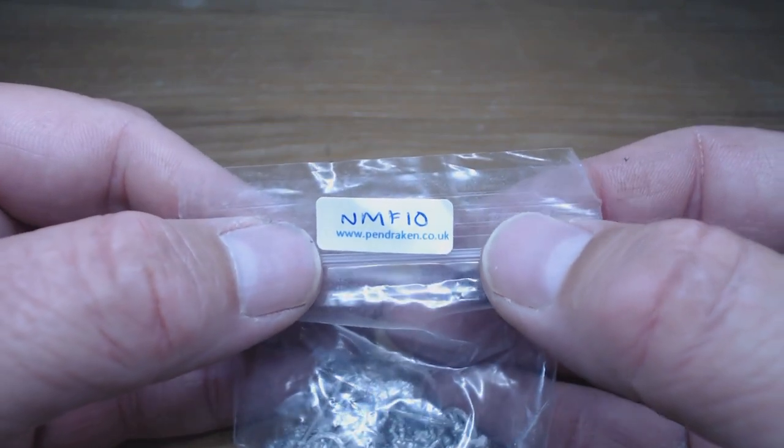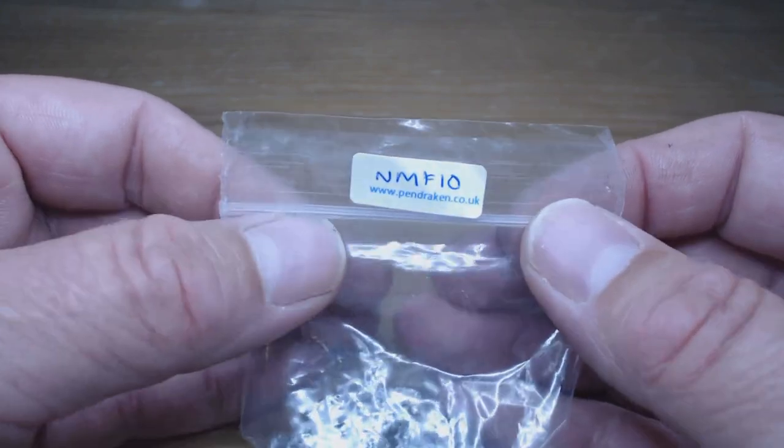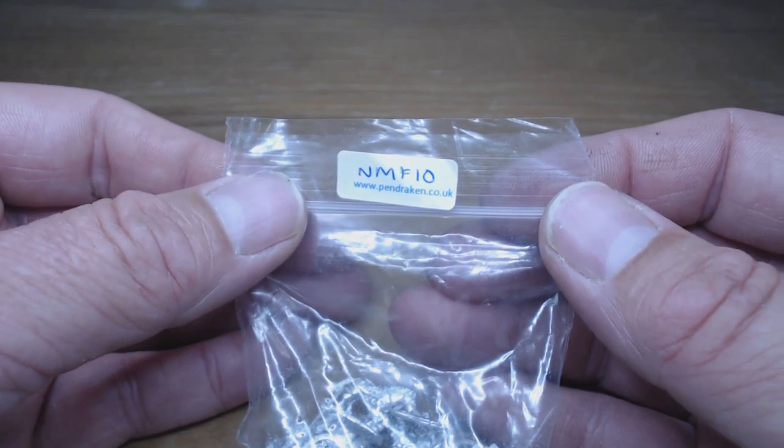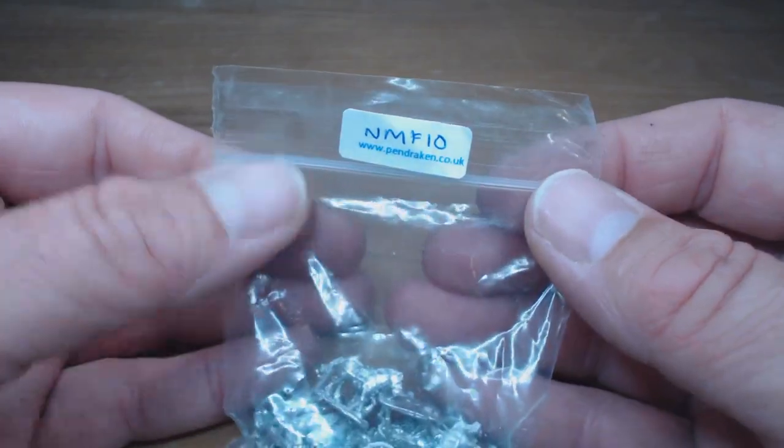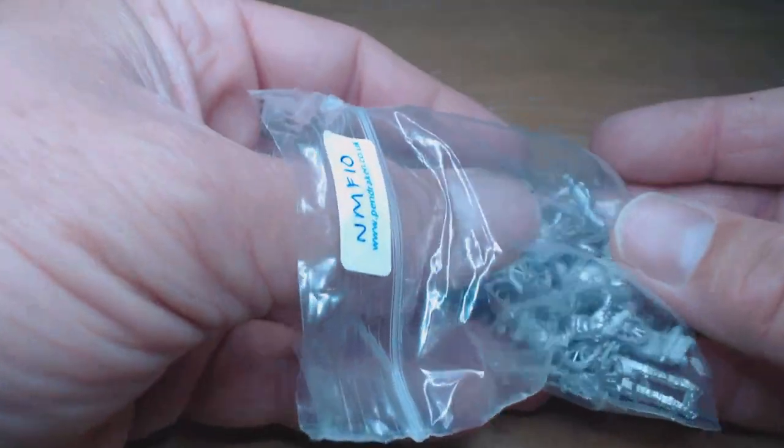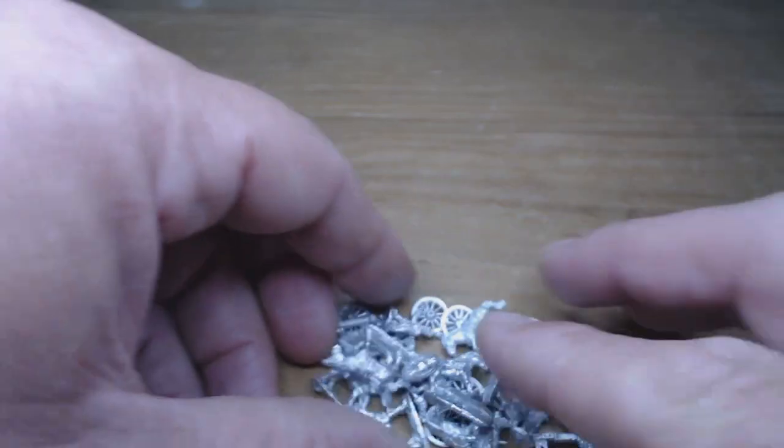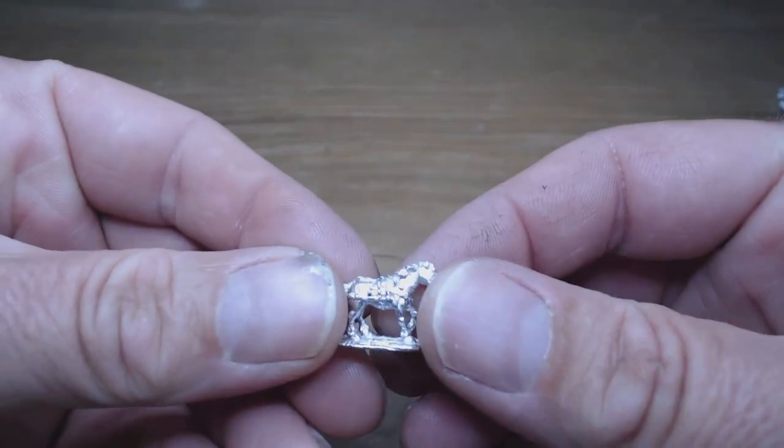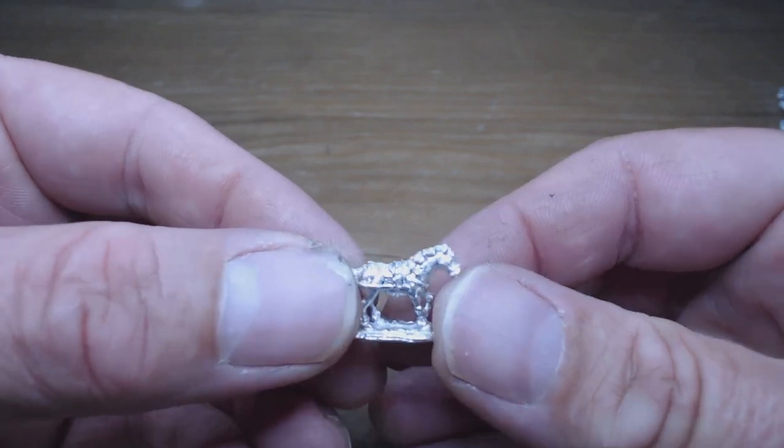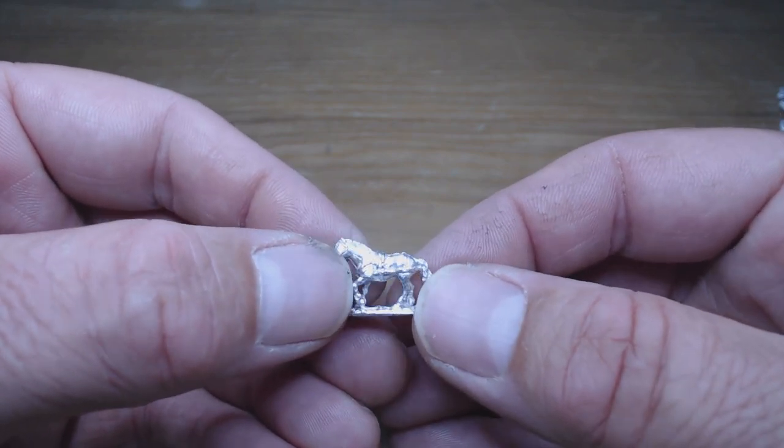Next up is NMF10 which is guns, limber, horses, crew. Two pack contains two guns, two carriages, two barrels, four wheels, eight crew, two limbers, four wheels, eight horses. Let's tip out and have a look. So we have in total eight horses and these are the horses. You gotta remember this pack is only five pounds fifty for all this crazy stuff here.